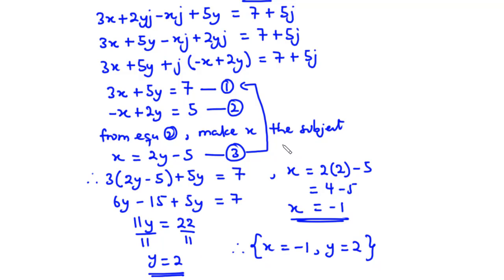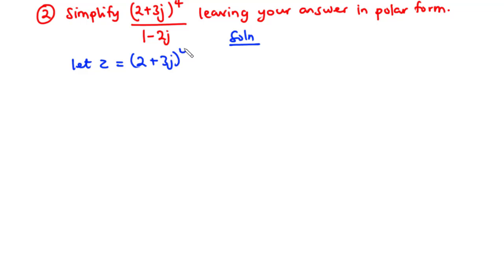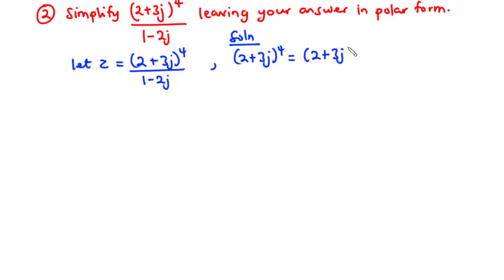Now let's move on to question 2: simplify (2 + 3j)^4 divided by (1 - 2j), leaving the answer in polar form. Let z = (2 + 3j)^4 / (1 - 2j). We first simplify the numerator by writing (2 + 3j)^4 = (2 + 3j)^2 × (2 + 3j)^2.